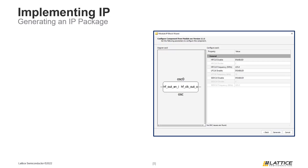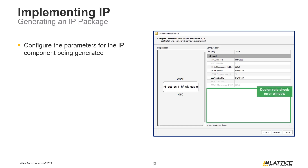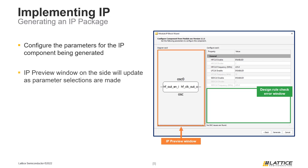The next page in the IP generation window is called Configure Component. In this stage of the process, users will be able to define the parameters for the IP they're generating. If there are any issues with the parameters users select, a design rule check error will be posted in the area at the bottom of the window. As users modify the parameters, the IP preview window will update to display a block view of the module being generated. Once users are done configuring the parameters, they should click the Generate button to finish generating the IP.